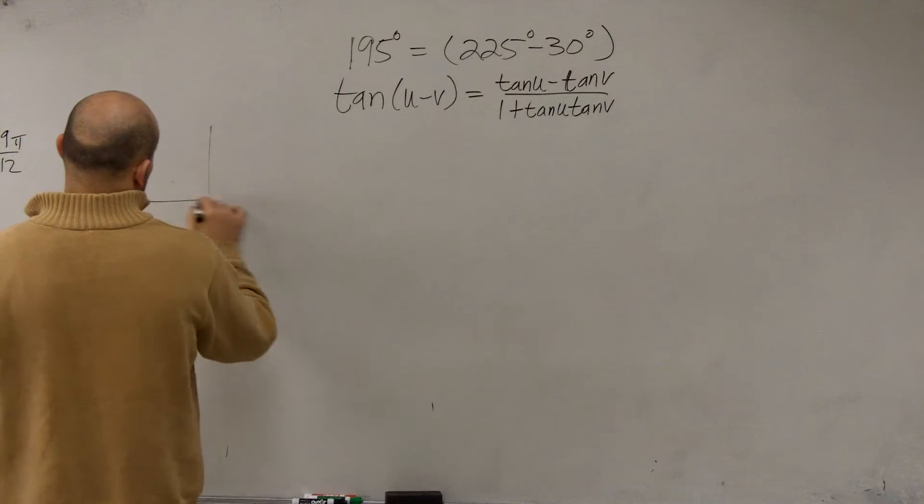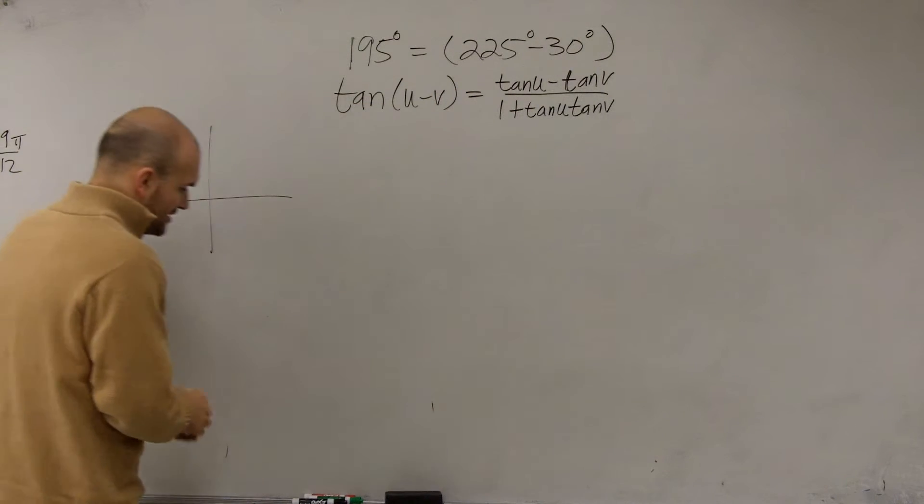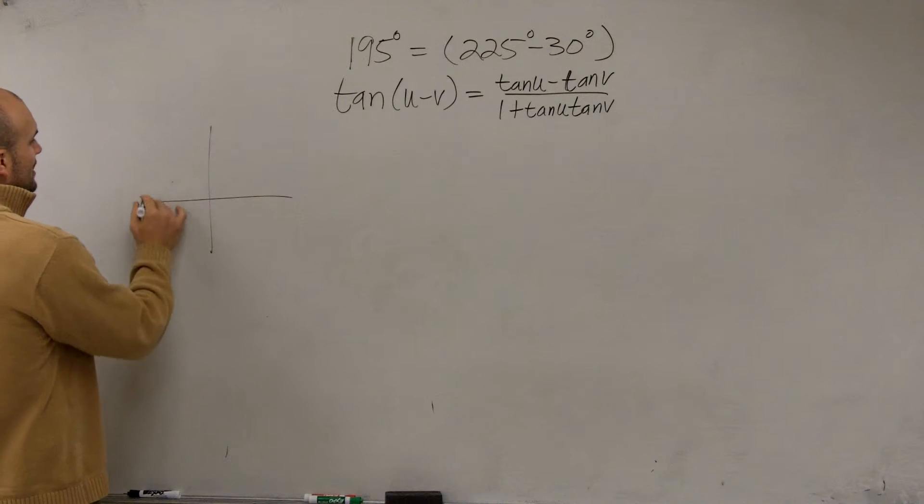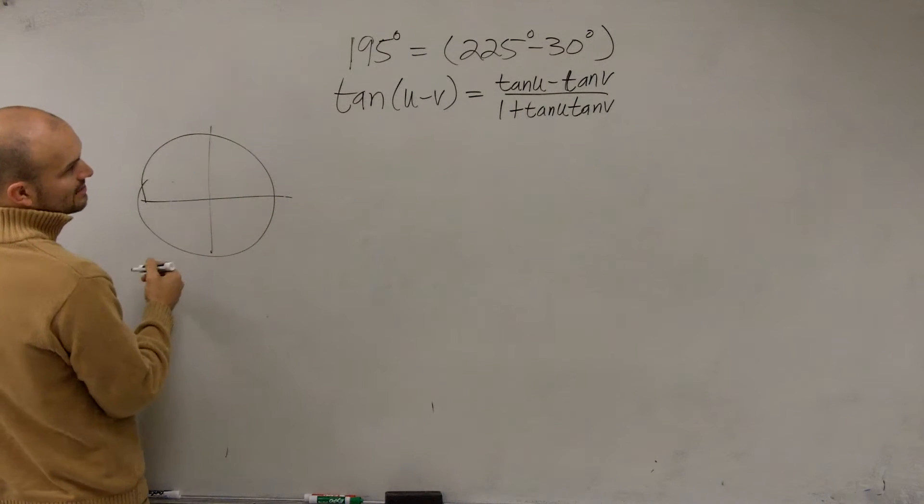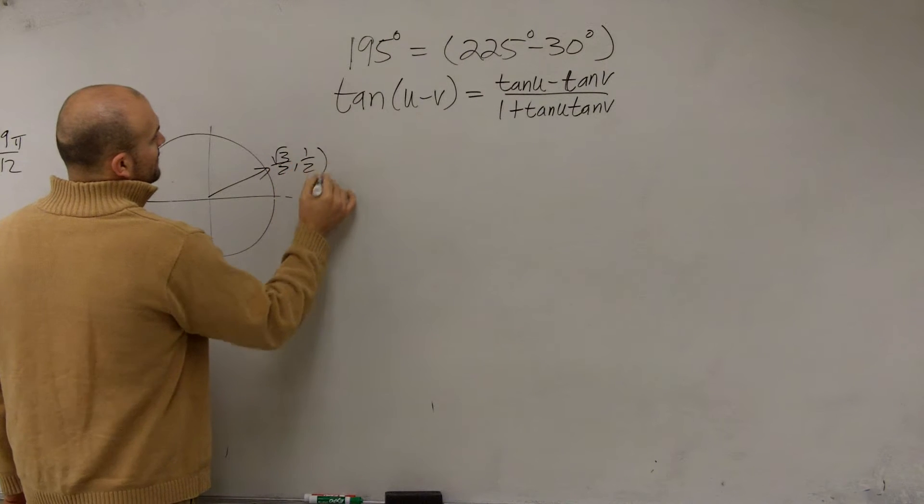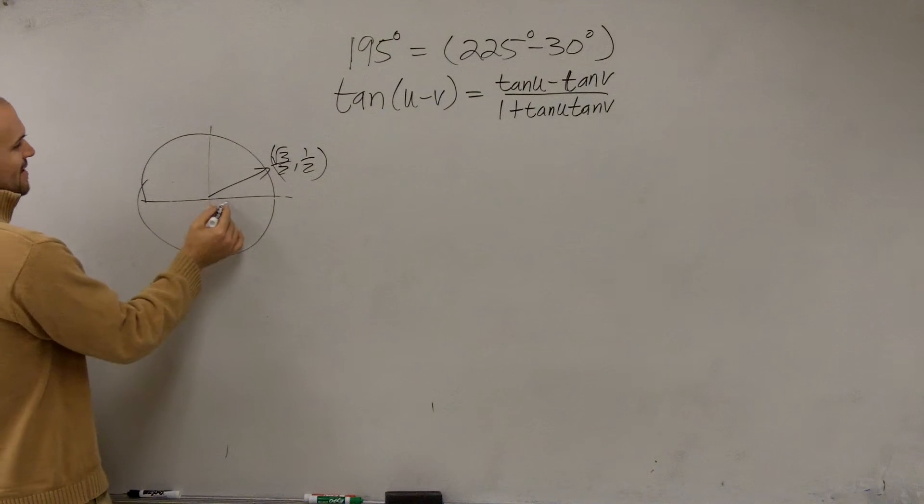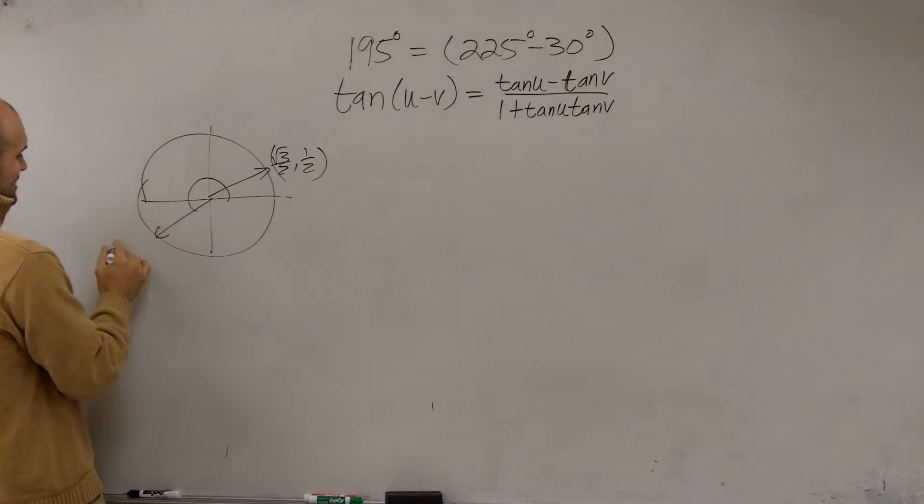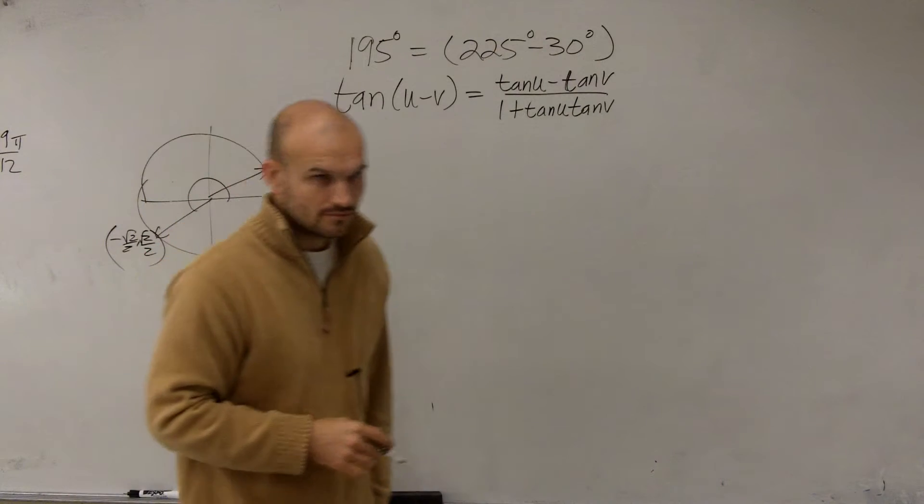I'm not going to spend a whole bunch of time because we just already did evaluate for these, but we remembered that our two points were at 30 degrees, which was square root of 3 over 2, comma, 1 half. And then we found 225 degrees was at the point negative square root of 2 over 2, comma, square root of 2 over 2.